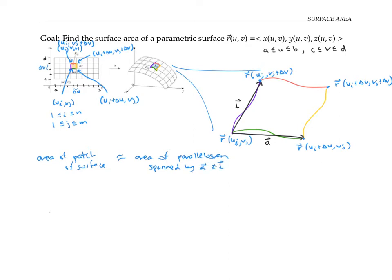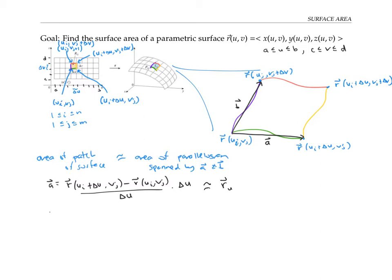Let me write down more information about a and b. The components of a are obtained by subtracting coordinates of its beginning point from its endpoint: a equals r(u_i + delta u, v_j) minus r(u_i, v_j). I'll divide and multiply by delta u — that doesn't change the value, but it allows me to recognize this as a difference quotient as I move in the u direction while keeping v fixed. So this expression is approximately equal to the partial derivative r sub u times delta u.